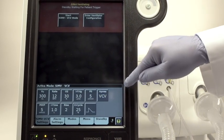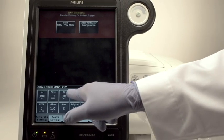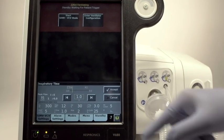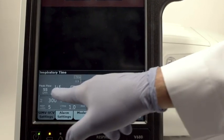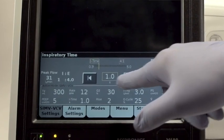It is very important to note that setting the eye time makes changes to the delivered peak flow rate. To take the guesswork out, V680 gives feedback on the new peak flow as you adjust the eye time. Reduce the eye time to increase the peak flow and increase the eye time to decrease the peak flow.